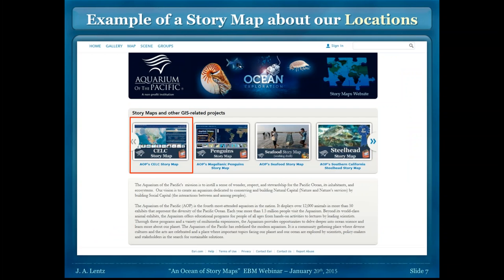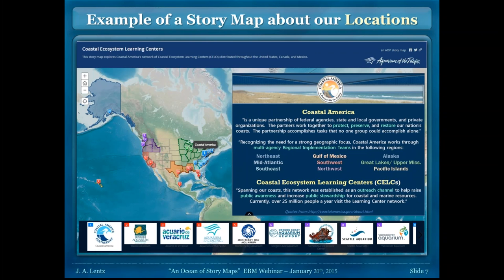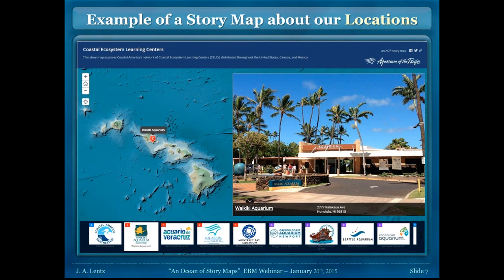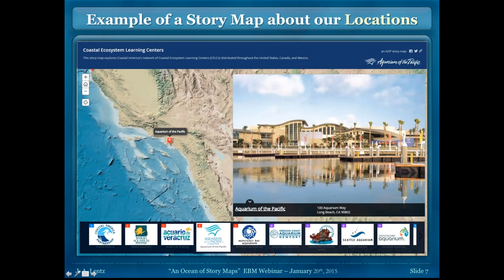We also work with other similar facilities and have a story map summarizing them — our CELC story map, which stands for Coastal Ecosystem Learning Centers. This story map connects all the United States and at least one Mexican coastal ecosystem learning centers, which are facilities — usually aquariums — designed to preserve, protect, and restore our coasts and educate the public. As you look at the story map, you see different regions; clicking through, the map travels to each location showing a picture, address, and a link to the facility's website.